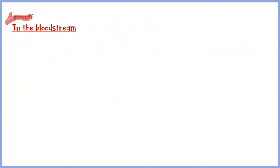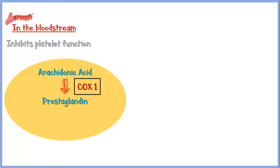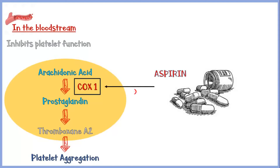Once in the bloodstream, aspirin causes inhibition of platelet function. In platelets, arachidonic acid is formed from membrane phospholipids, and this arachidonic acid is converted into prostaglandin by the enzyme COX-1. Then prostaglandin is converted to thromboxane A2, which causes platelet aggregation and formation of blood clots. Aspirin irreversibly inhibits the COX-1 enzyme and reduces the formation of prostaglandin, and thereby platelet aggregation.